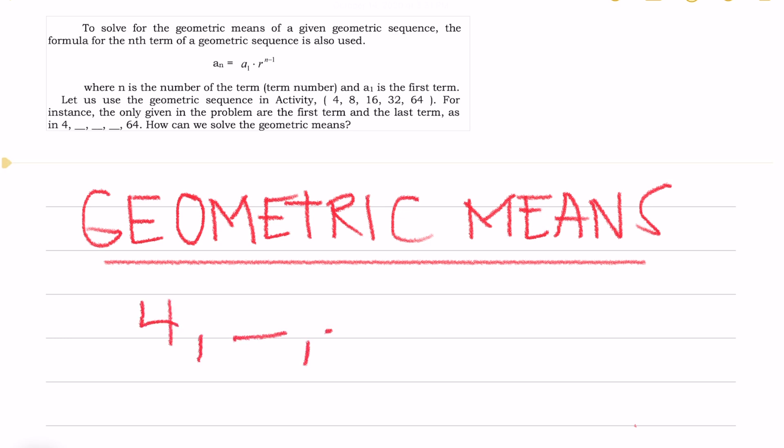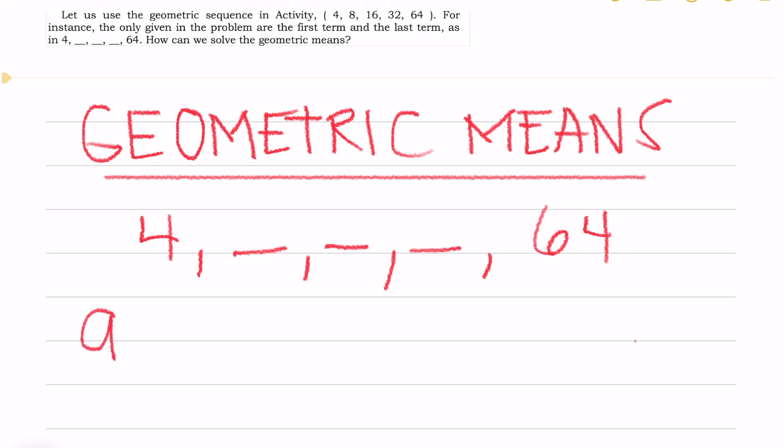4, missing the 3 terms, that's 64. What is the first term? That is 4. And the fifth term, your a sub n is 64. Your subscript of a becomes 5 because we have 5 terms: 1, 2, 3, 4, and 5.